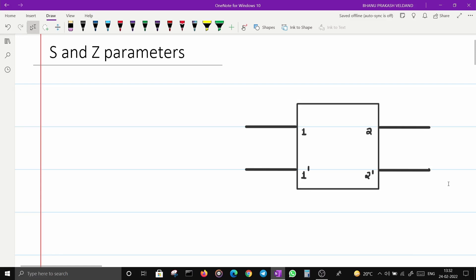In this video we will discuss S and Z parameters. Scattering parameters, shortly called S parameters, are used to describe how energy propagates inside or through an electrical network.